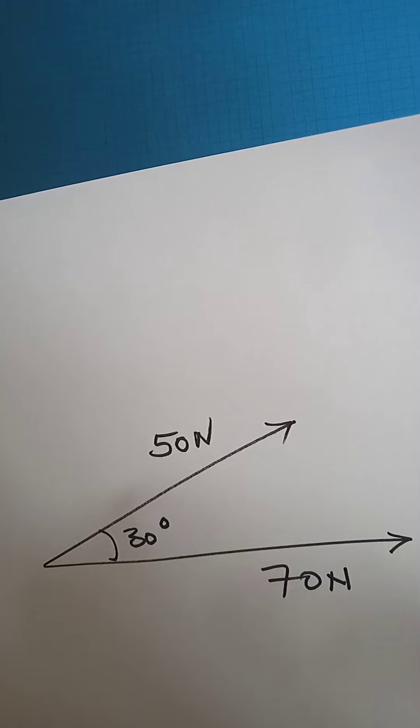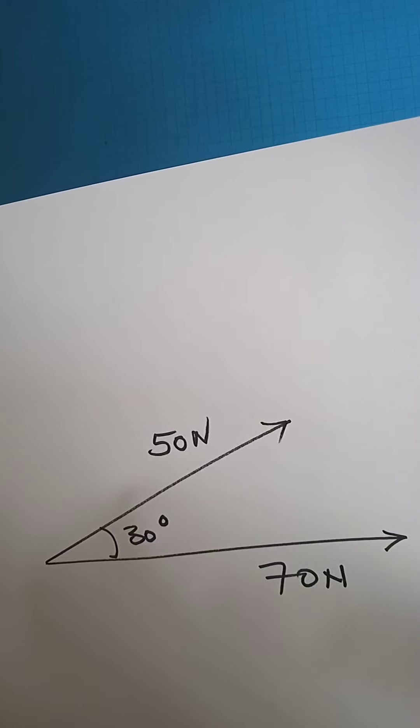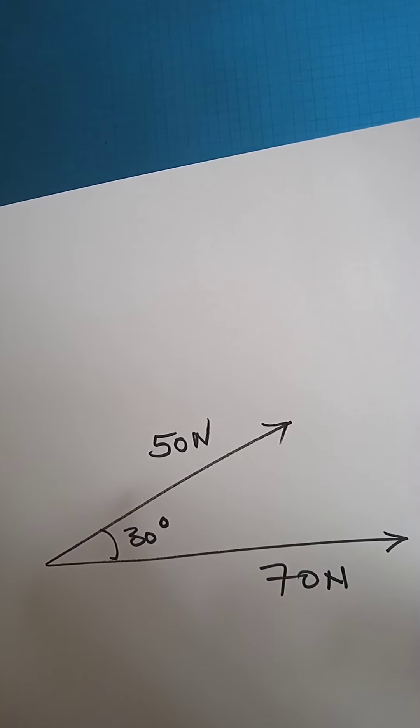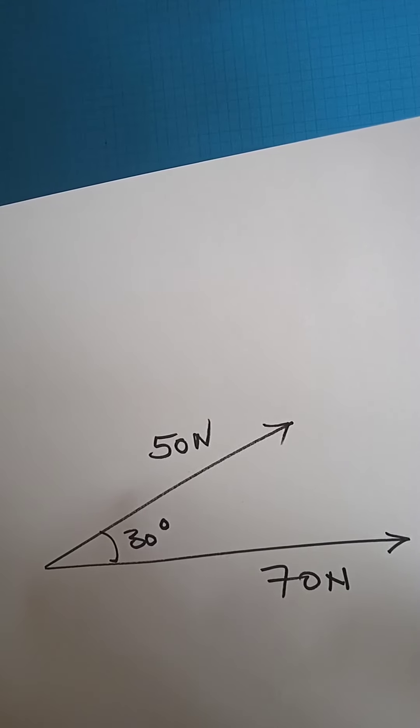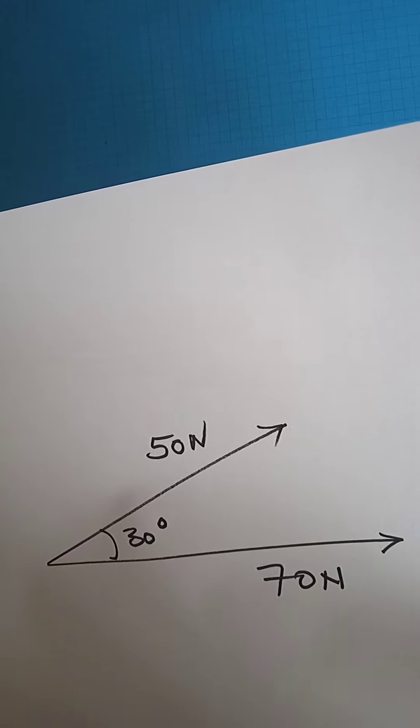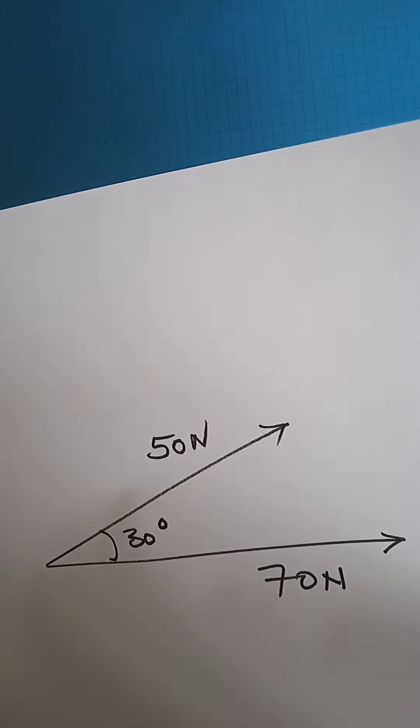So with me here, I do have two forces acting on a point. A 50 Newton pulling force acting 30 degrees above the horizontal line. Then we have a 70 Newton force acting eastwards.